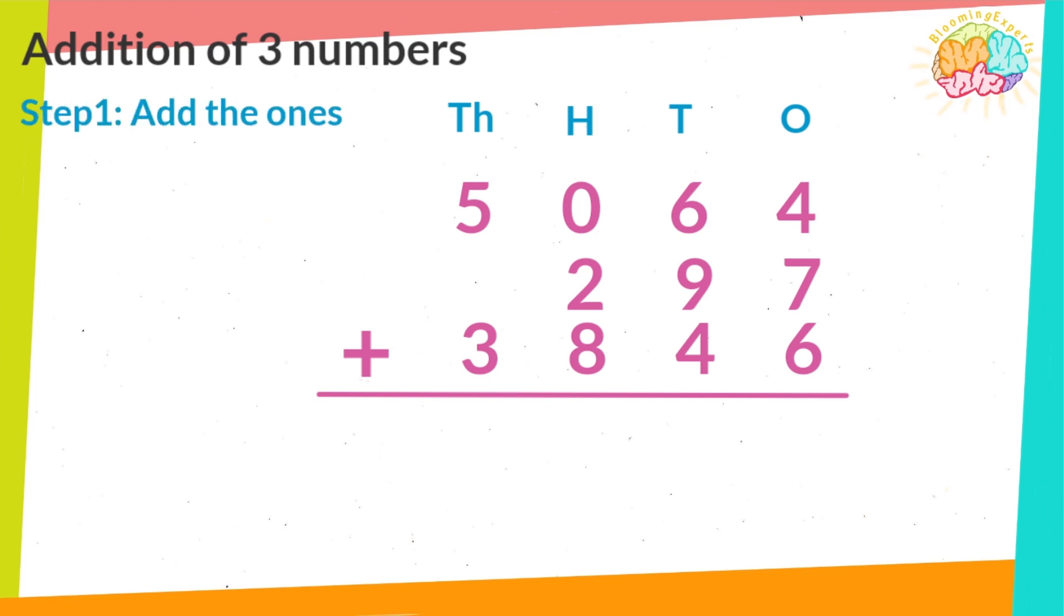Step 1. Add the ones and make sure to write the answer below in the ones place. Add the numbers in order by counting forward. The total of the ones is 17, but it is a two-digit number. Keep the ones and carry the tens to the next digit.